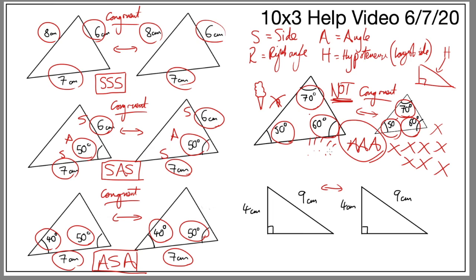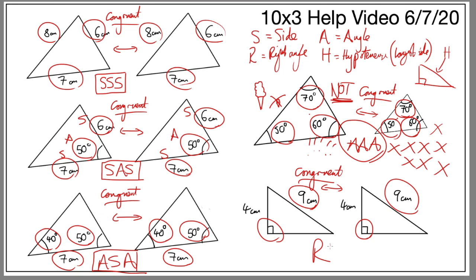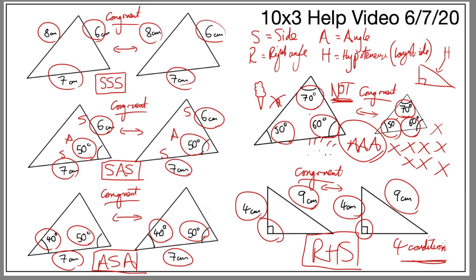The last pair of triangles is congruent. They are right-angled — we have a right angle (R), a hypotenuse of 9 (H), and a corresponding side (S) — so these two are congruent because of RHS. So there are four conditions which work: SSS, SAS, ASA, and RHS. And one that does not work: AAA.